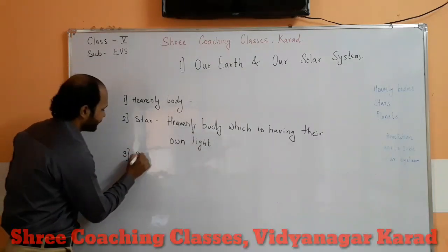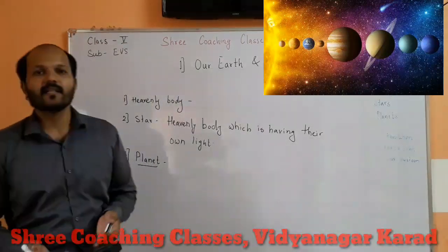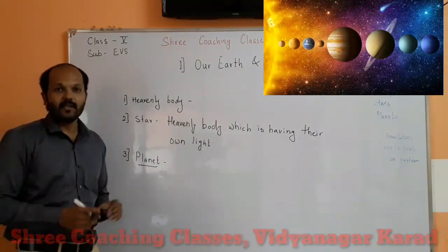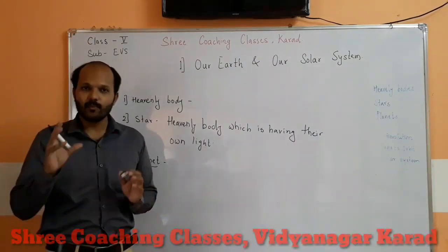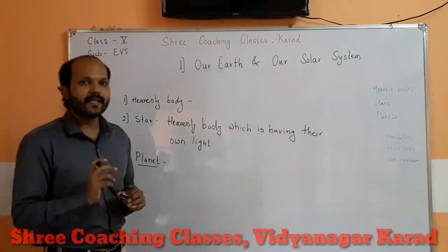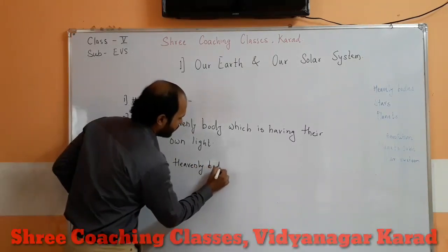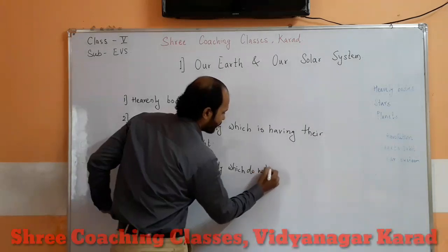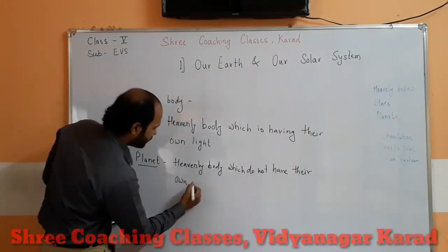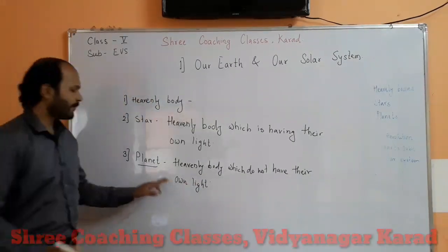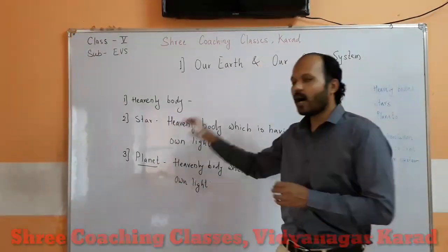The next point is planet. The heavenly bodies which do not have their own light are known as the planet. So this is our Earth — Earth also does not have its own light. So what is the definition of planet? The heavenly body which does not have its own light — these types of heavenly bodies are known as the planet. One planet I told you: Earth is our planet.